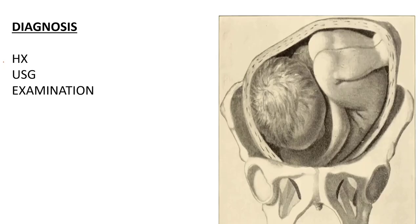To diagnose shoulder presentation, first take a thorough history. Most patients will report that their doctor previously told them the fetal lie is not normal, and some will even point to where the fetal head is located. Patients with unstable lie should be identified. Ultrasound is also very important — it clearly shows the lie and presentation, and importantly helps rule out placenta previa, which should always be excluded in shoulder presentation.